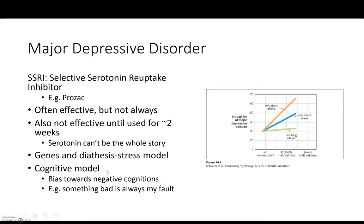Also know about the cognitive model of depression — a way of conceptualizing the thought processes that accompany it. There is a bias towards negative cognitions: the belief that things are bad because it's my fault and things will never change. It's a bias toward seeing things through dark glasses, where the world just appears more hopeless.